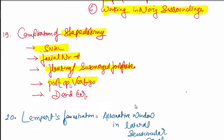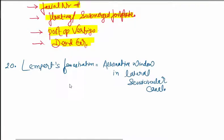Last point: Lempert fenestration. This is creating an alternative window in the lateral semicircular canal. Remember L - Lempert for L - lateral semicircular canal.